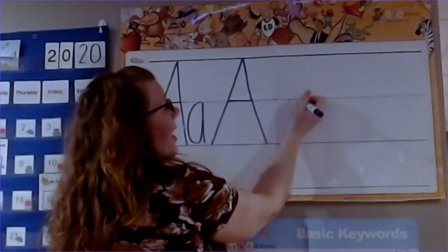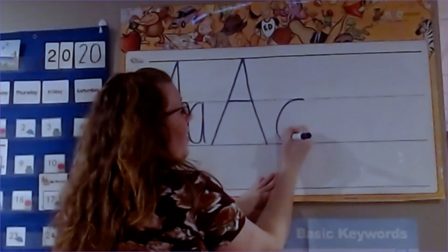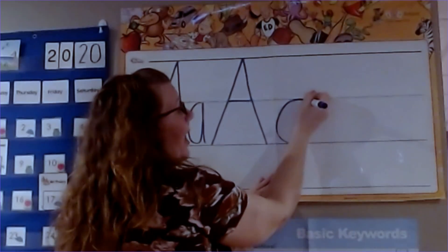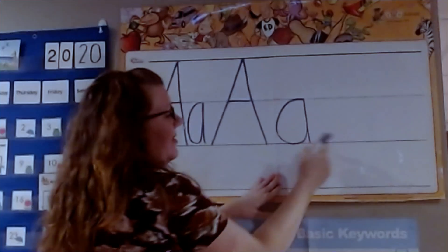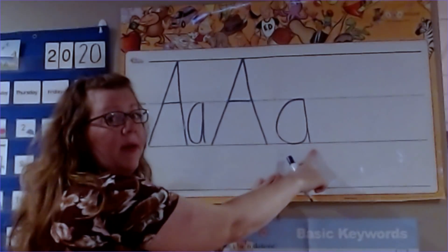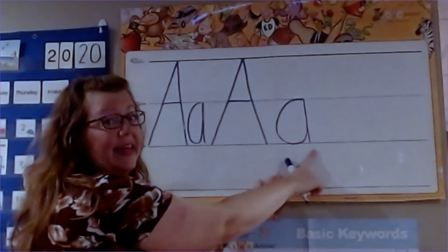It starts at the plain line and curves around, touches the grass line, goes all the way back up to the plain line, goes down to the grass, and stops. When you go back up and back down, it makes a little tail like that and that's what makes it look like an A and not a circle.